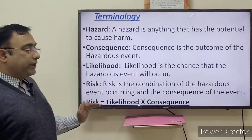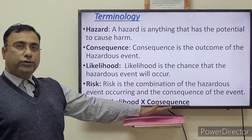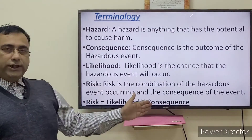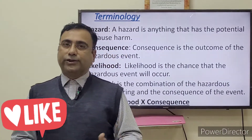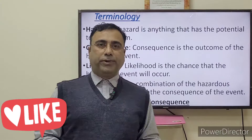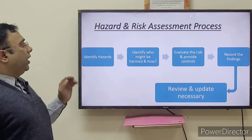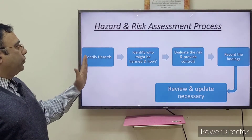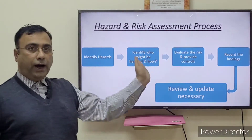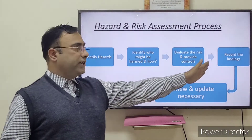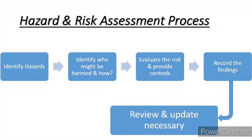Risk equals likelihood multiplied by consequences. When likelihood is multiplied by consequences, this gives a factor called the risk factor — an absolute number. In the process, first we identify the hazards and identify who might be harmed and how. Second, we evaluate the risk and record the findings — recording is very important so the event does not happen again. Then we review and update as necessary.